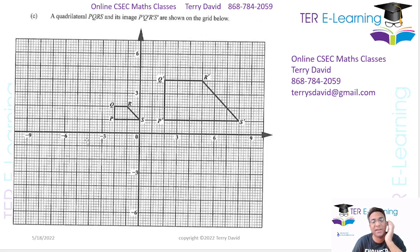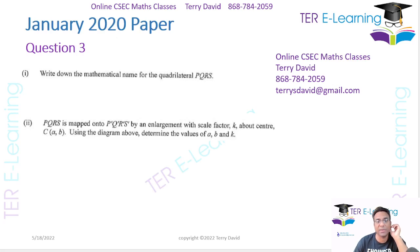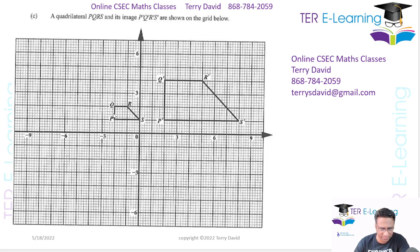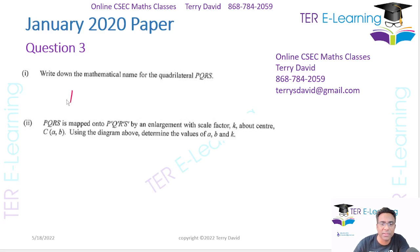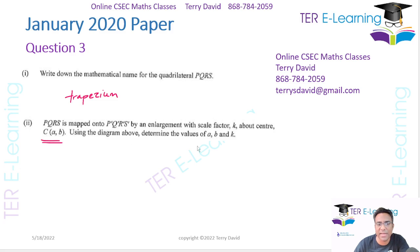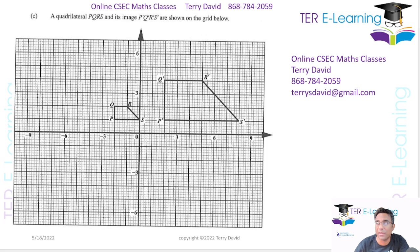Part C — we have a quadrilateral PQRS and its image P'Q'R'S'. First, they want the mathematical name of the quadrilateral. If you look at PQRS, you can tell that's a trapezium. Now they said PQRS is mapped onto P'Q'R'S' by an enlargement, scale factor K, about center C. We want to determine the center of enlargement and the scale factor K.